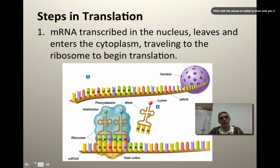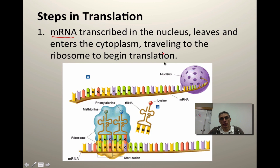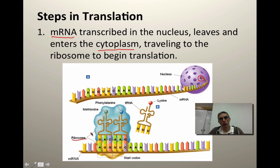The very first step is to get that messenger RNA that's been transcribed within the nucleus and get it where it needs to go. It's going to travel out of the nuclear pores found in the nuclear membrane, and that disposable copy is going to travel out and find its way into the cytoplasm of the cell and eventually to the ribosome — which is one of the cell's organelles — to start the production of protein. That's the very first step of translation.